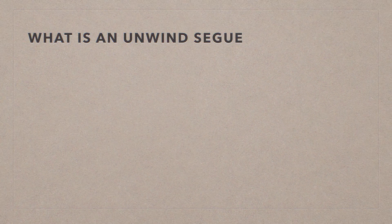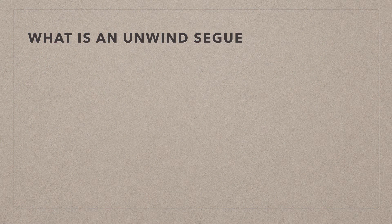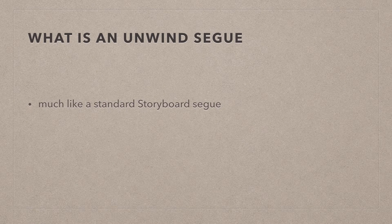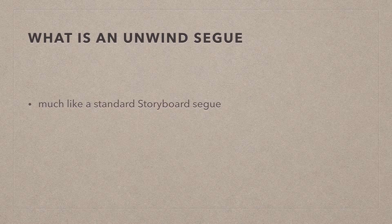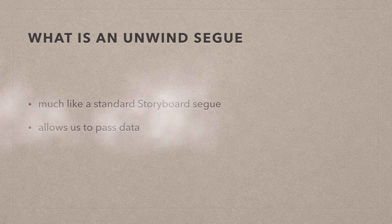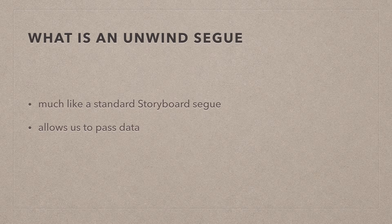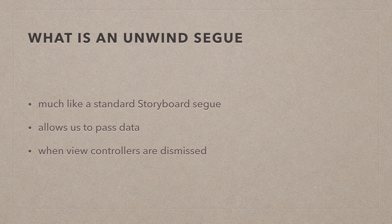Much like a standard segue, the unwind segue allows you to pass data, but in this case it's the second leg. A standard segue allows you to pass data from one view controller to another, but in the olden days you had to dismiss it manually and it was difficult to get data back from the dismissed view controller. The unwind segue allows us to pass that data back and also dismisses view controllers for us, so we have to write less code.